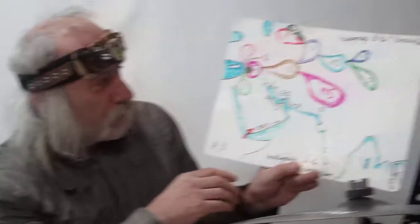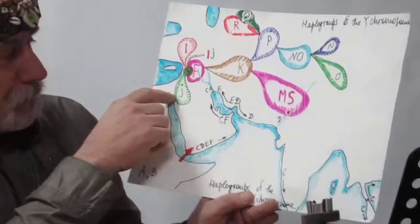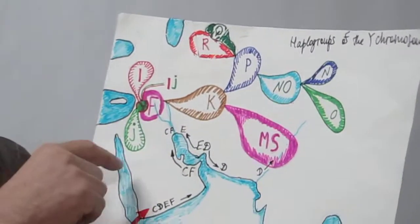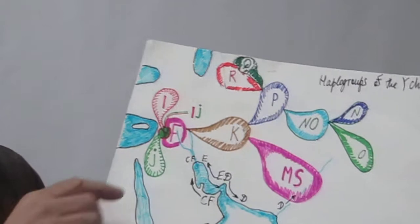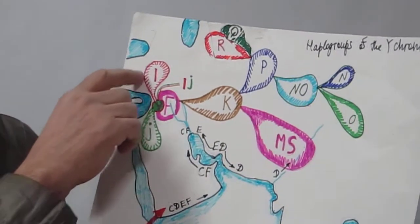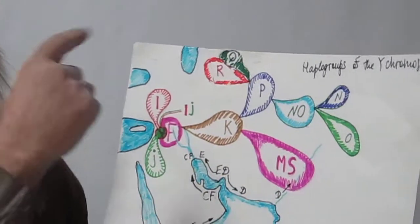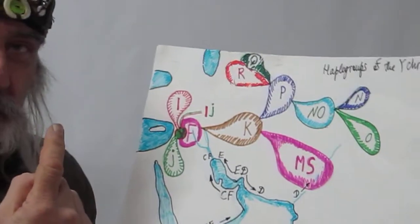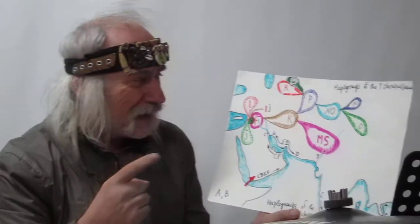But now, see, this is the F chromosome from which stem the daughter groups, J, which stayed in the east, in the near east. And at the same time, split the I chromosome, which is the first chromosome in Europe, which is the chromosome of the people who came to Europe first, 45,000 years ago, and replaced Neanderthals.